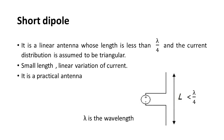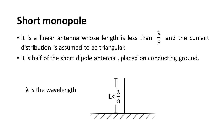The second one is the short dipole. It is a linear antenna whose length is less than lambda by 4, and the current distribution is assumed to be triangular. It has a small length with linear variation of current. It is a practical antenna.